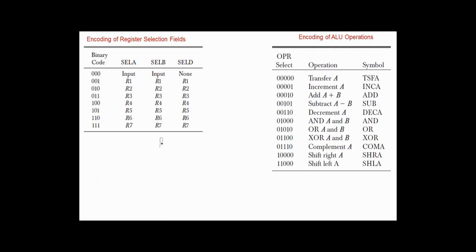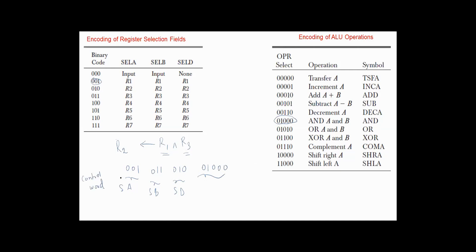For example, if we have the micro-operation R1 AND R3 and we want to store the result in R2: Select A, in this case, is 0, 0, 1 for R1. Select B is 0, 1, 1 for R3. Select D is 0, 1, 0 for R2. And the operation is AND. So this is the control word for this micro-operation.